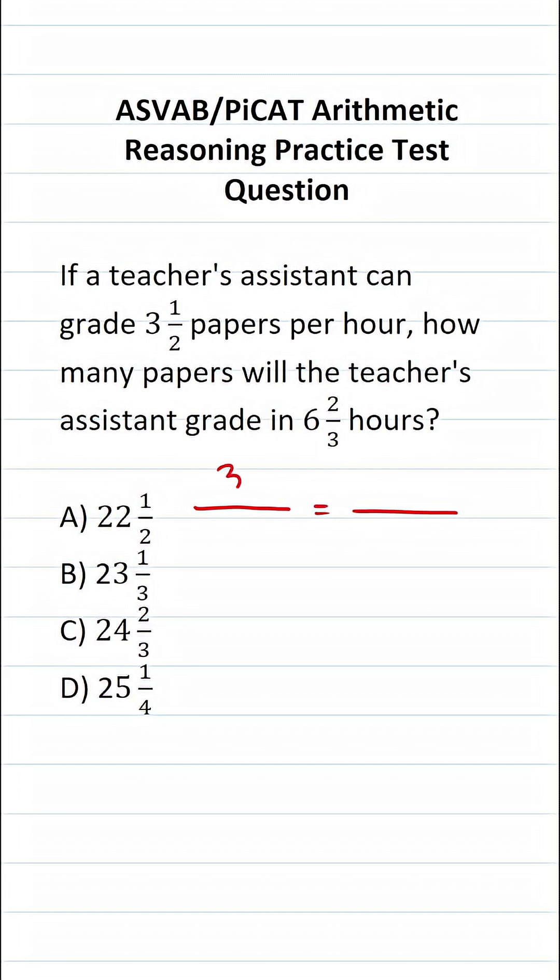I'm going to fill in the left-hand side of the proportion with the information I have, notably that the teacher's assistant can grade three and one half papers every hour. We want to determine how many papers, so that's unknown. Let's represent that with the letter variable X. The teacher's assistant could grade in six and two thirds hours.